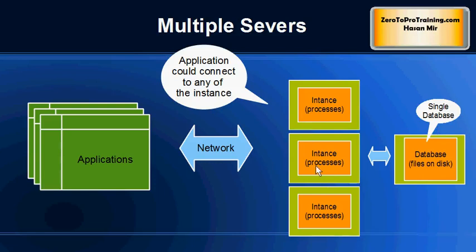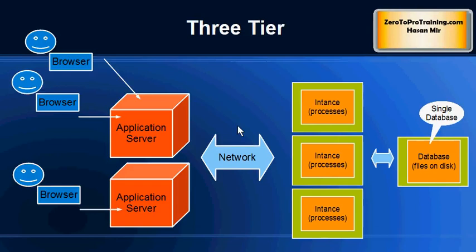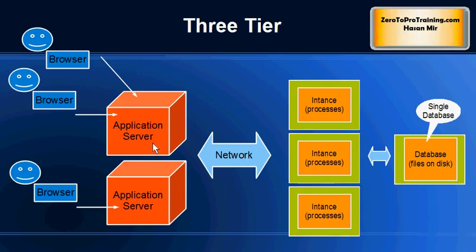On the screen you are looking at a three-tier environment: browsers on the first tier talk to an application server on the second tier, and then the database management system is on the third tier. Do not confuse the load balancing happening at the application server level with the load balancing happening within a RAC environment. The actual application logic runs within the application server; the browser is simply used to view the output.